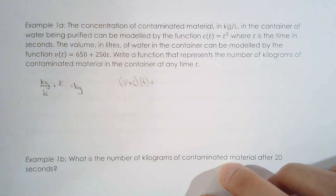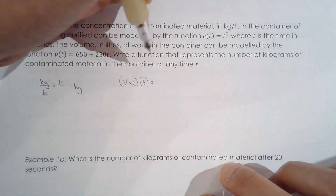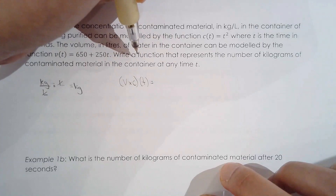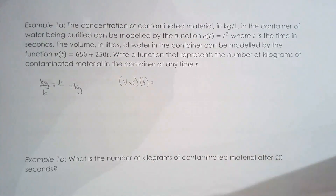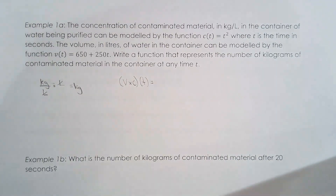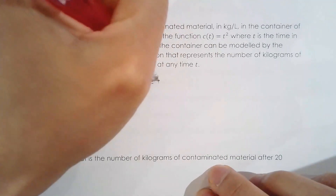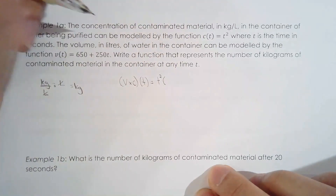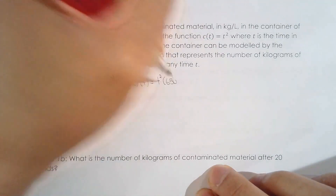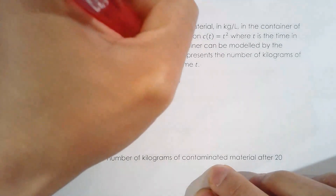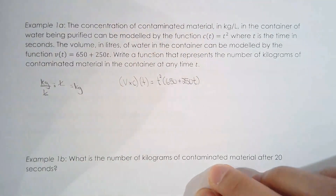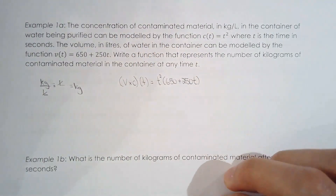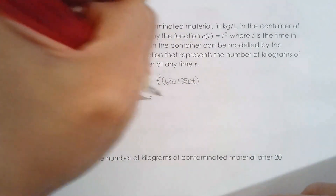The product of v and c is going to give us a function that determines the number of kilograms of contaminated material in the container at any given moment. So that is t squared times (650 plus 250t). Let's simplify that.